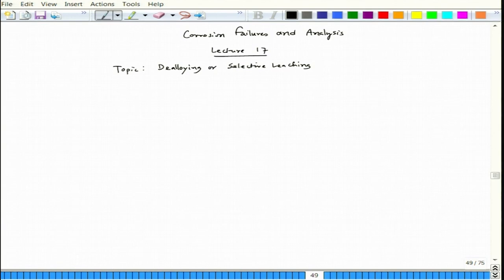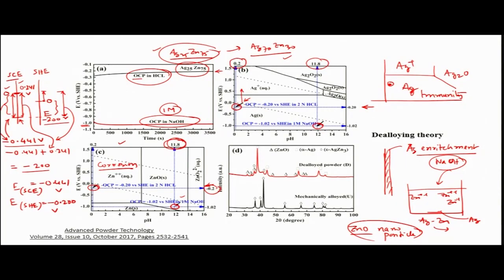We started looking at the relation between the Pourbaix diagram of silver and zinc, and how we get porous silver. It matches the pH and potential requirements in the mixed Pourbaix diagram of silver and zinc, where silver should stay as silver but zinc should dissolve as Zn²⁺. When we change the pH of the solution the potential also changes — as seen with NaOH, where the OCP shifts to a lower value — enabling us to get nanoparticles of zinc oxide.